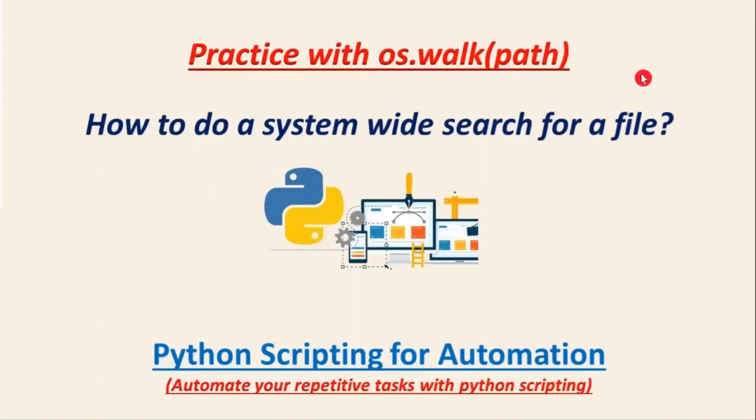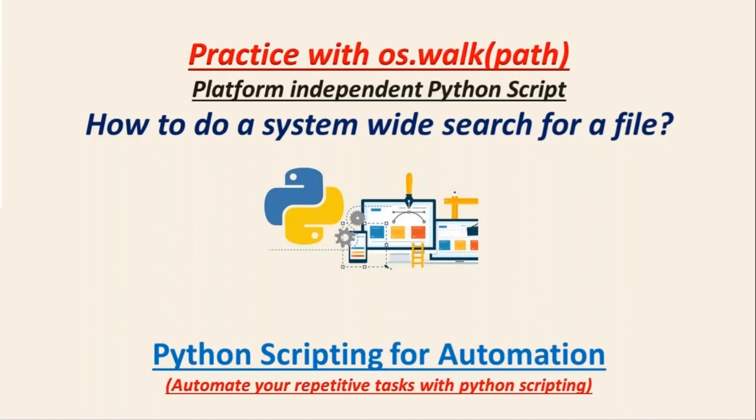Here we are going to do a small practice with os.walk function — how to do a system-wide search for a given file. Assume you have a file but you want to search its path in your entire file system. While developing this script, you have to make it platform independent, meaning the same script should work on Windows as well as Unix-like systems. First I'm going to develop this script on Unix-like systems, then on Windows.